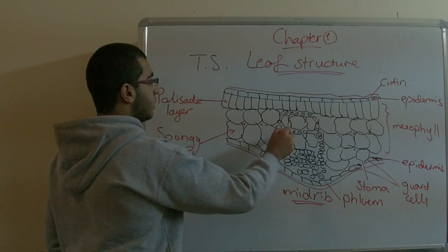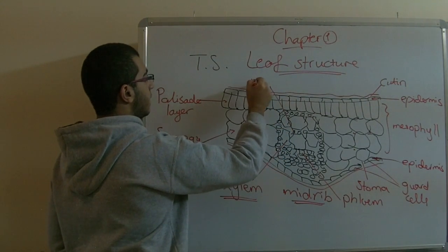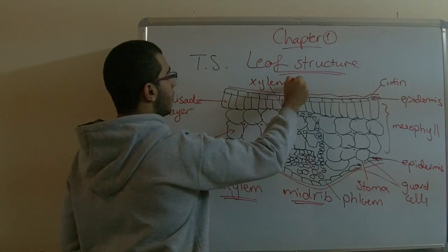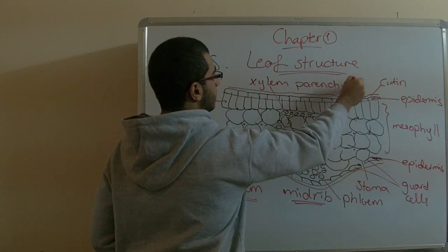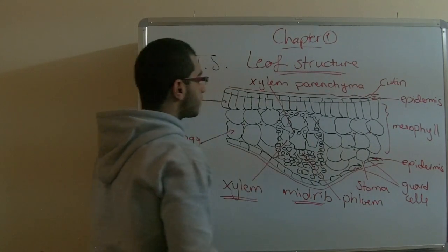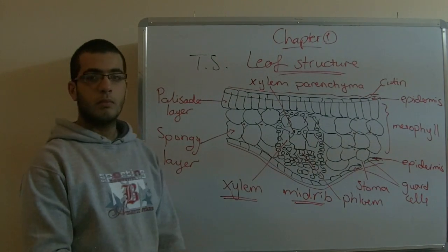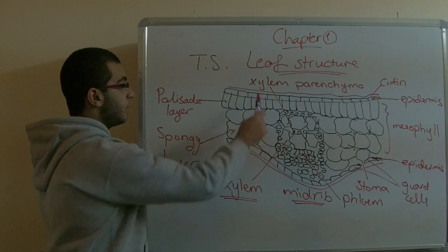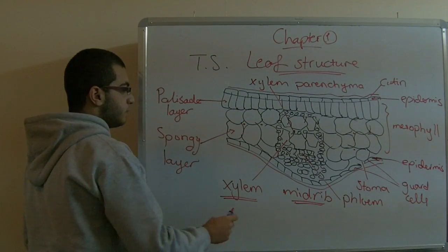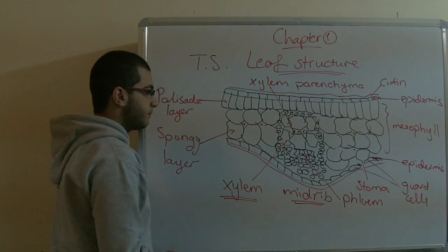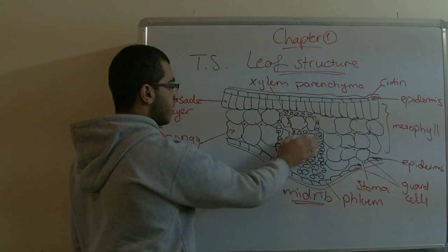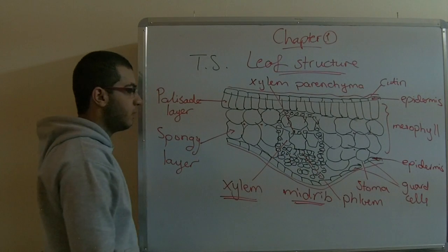We have the xylem supported by a type of cells called the xylem parenchyma. The xylem is enclosed by a group of cells called the xylem parenchyma. Here we also have collenchyma cells between the xylem and parenchyma cells.